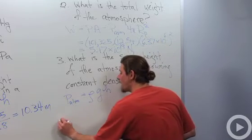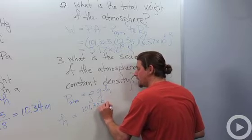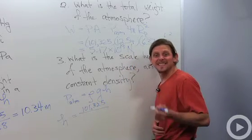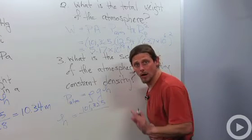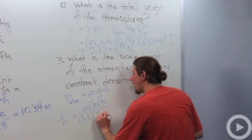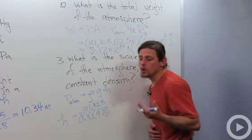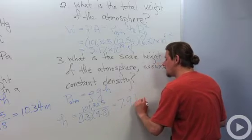So we'll have H equals P atmosphere 101,325 over the density of air at sea level, which is about 1.3 kilograms per cubic meter. So I'll have 1.3, 9.8, and when you work all that out you end up with 7.9 kilometers.